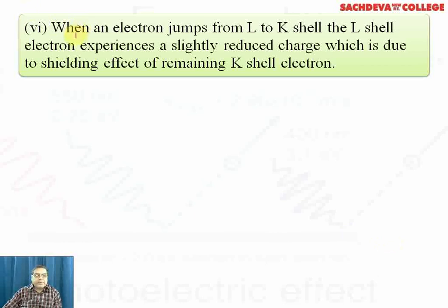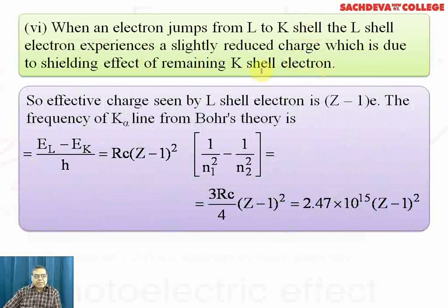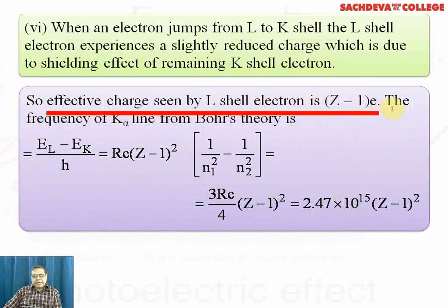When electron jumps from L to K shell, the L shell electron experiences slightly reduced charge due to shielding effect of the remaining K shell electron. So effective charge seen by L shell electron is (Z-1)e.